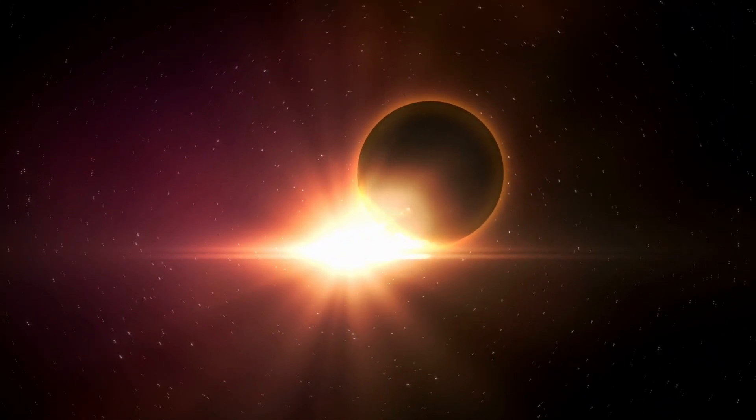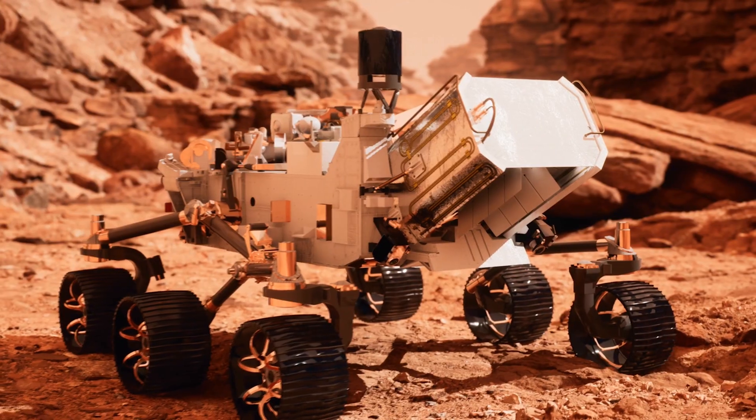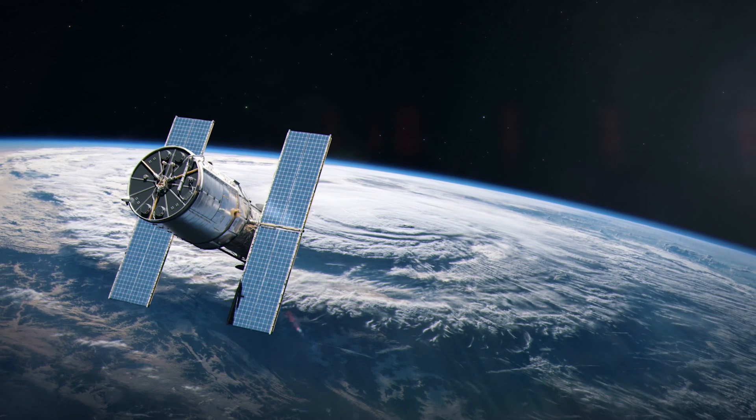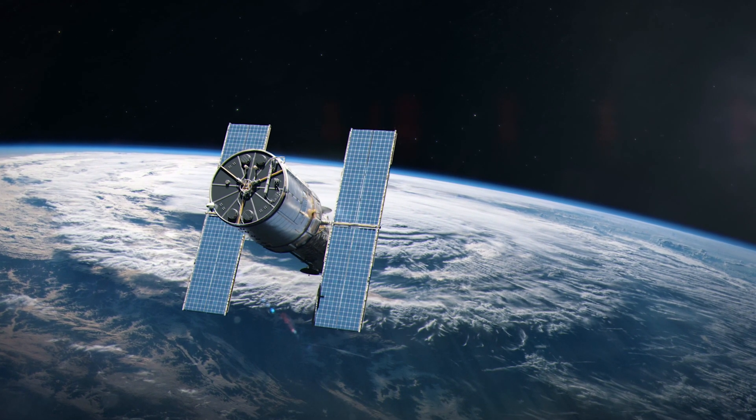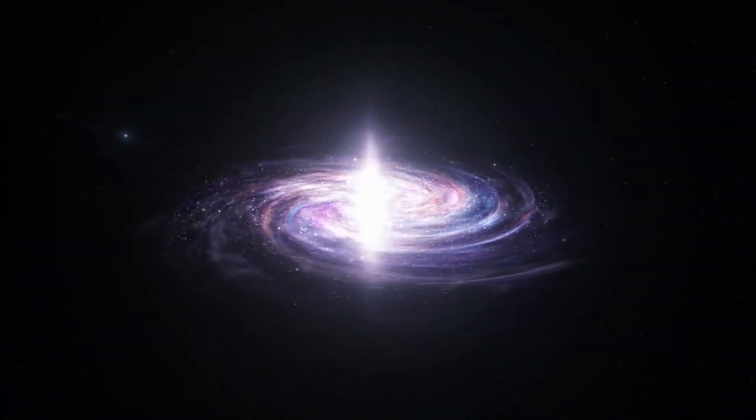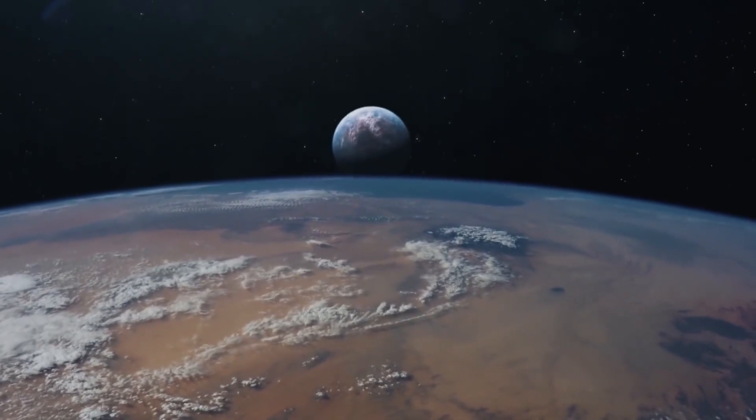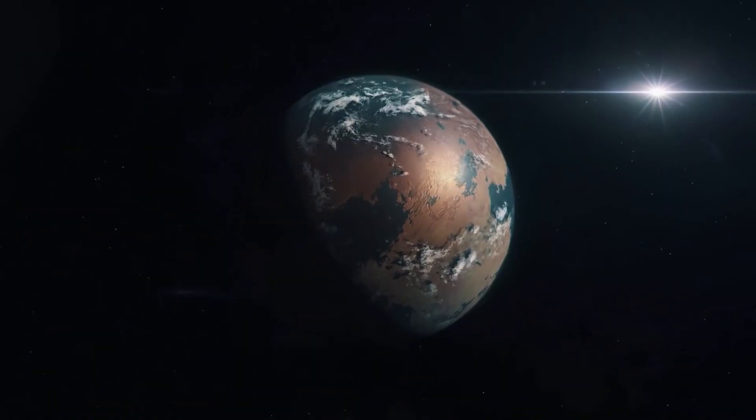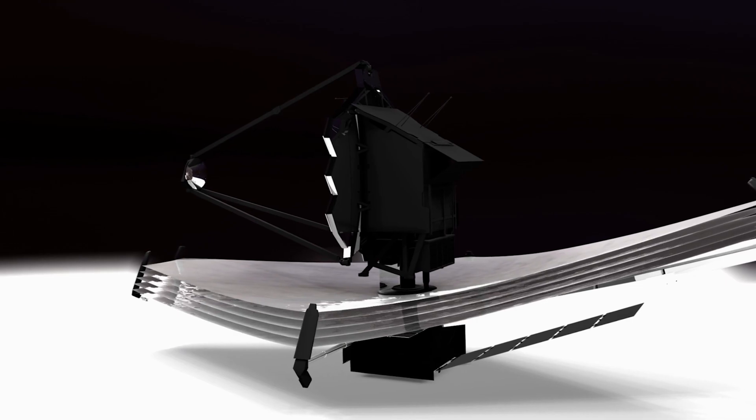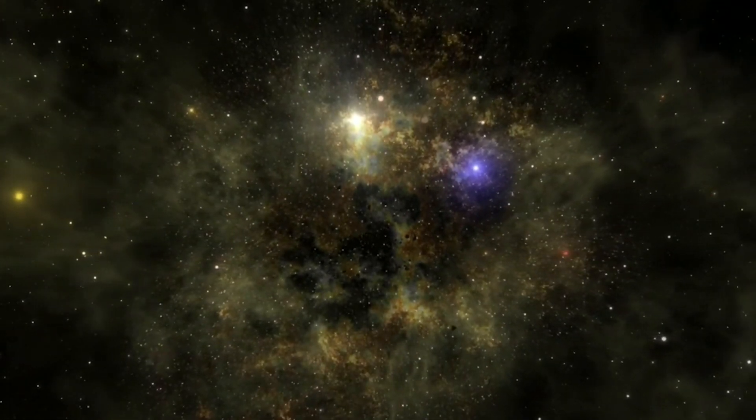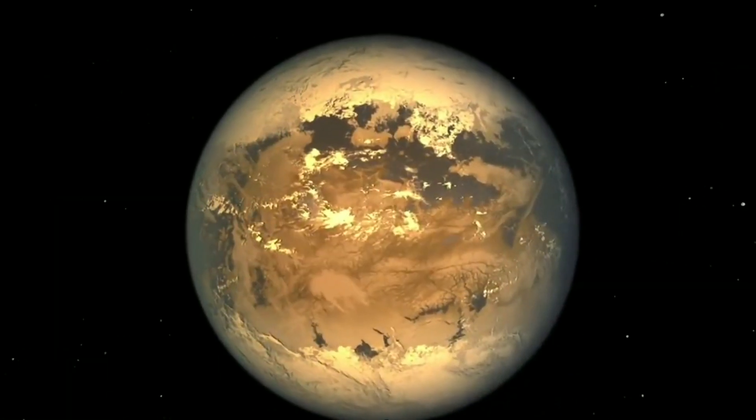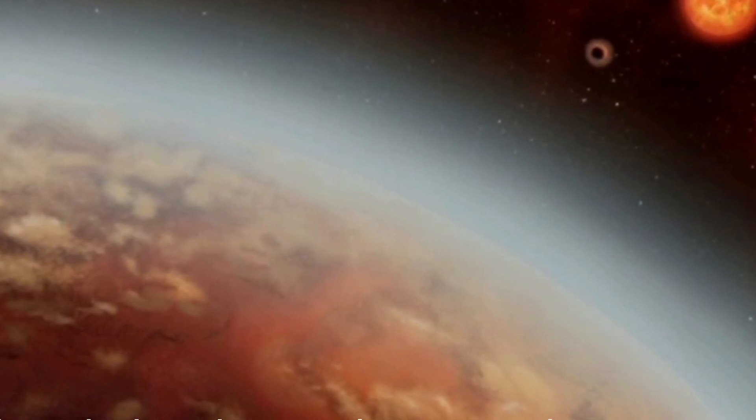The new planet, LP890-9c, adds to the list of worlds discovery teams suggest might be examined by the James Webb Space Telescope. Launched in December 2021, the telescope has settled into its orbit a million miles from Earth and already has begun reading out the gases present in exoplanet atmospheres. The telescope's instruments include spectrographs, which can capture the light shining from a parent star through the atmospheres of exoplanets, providing a spectrum and a fingerprint of the types of gases present.